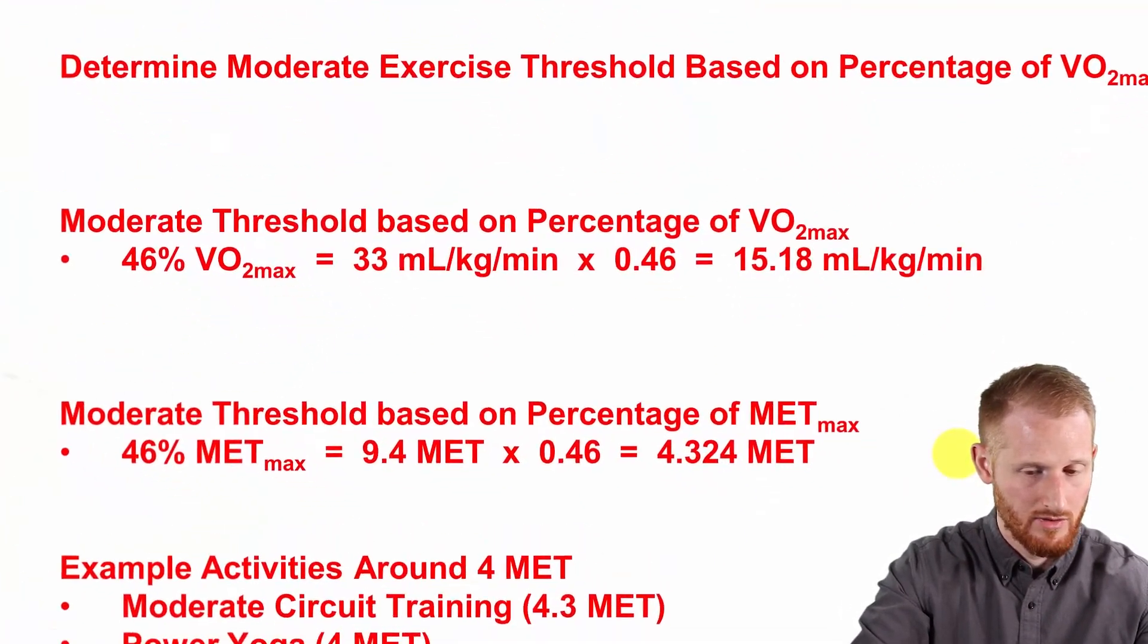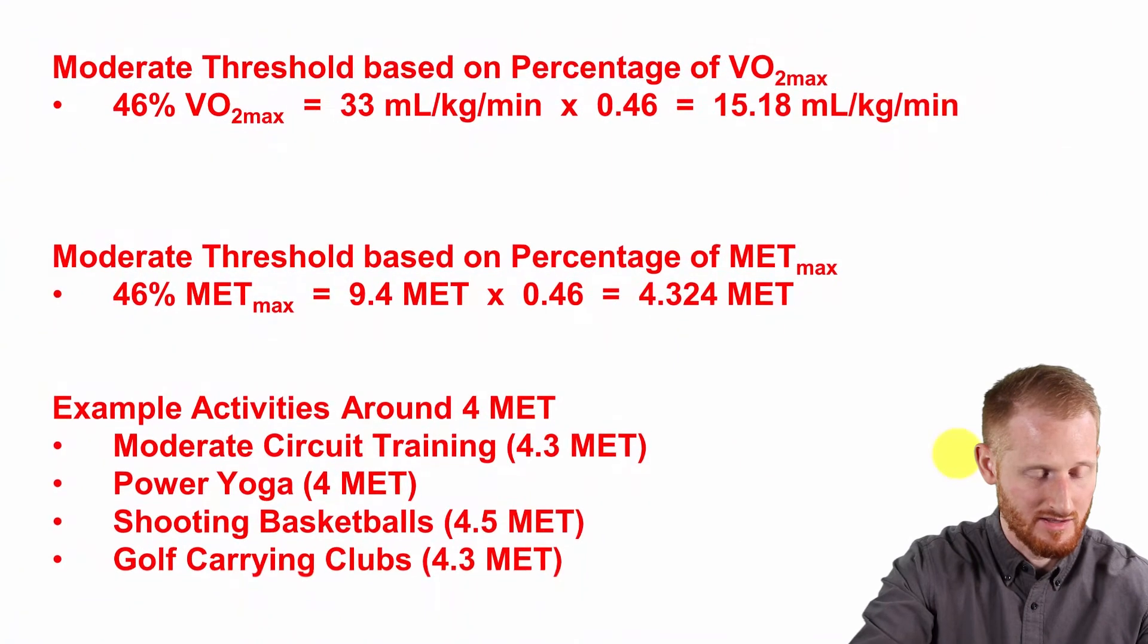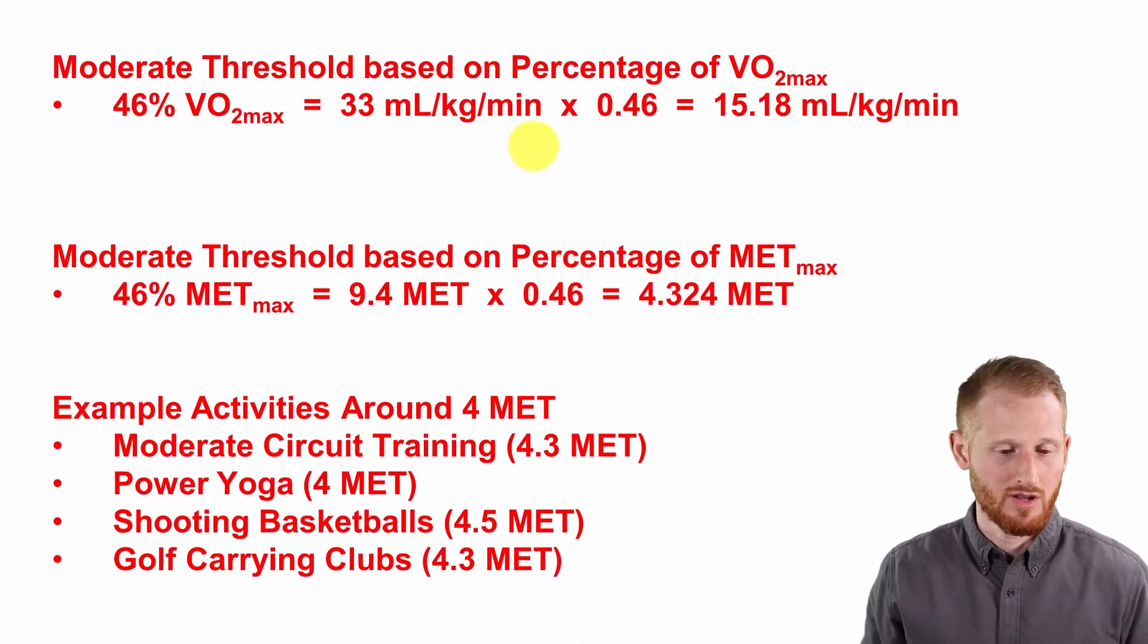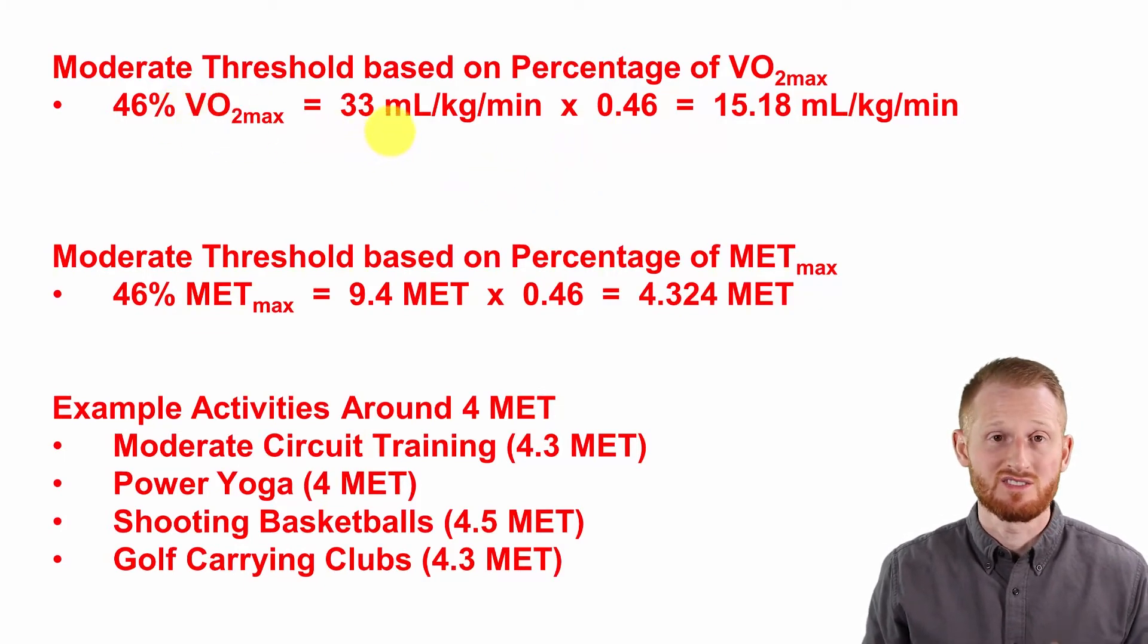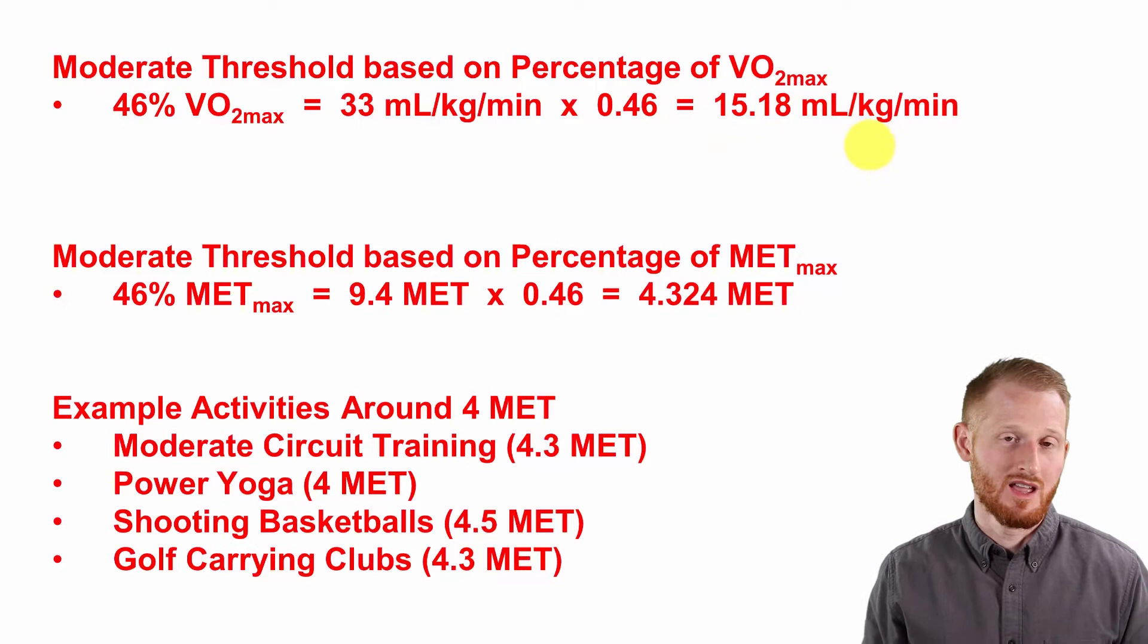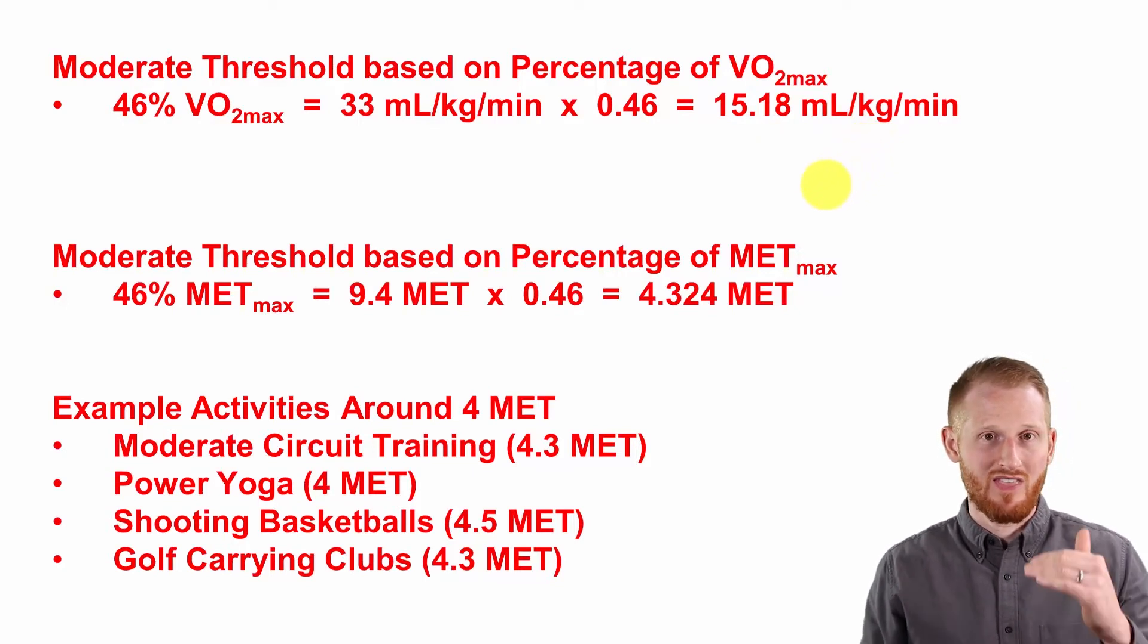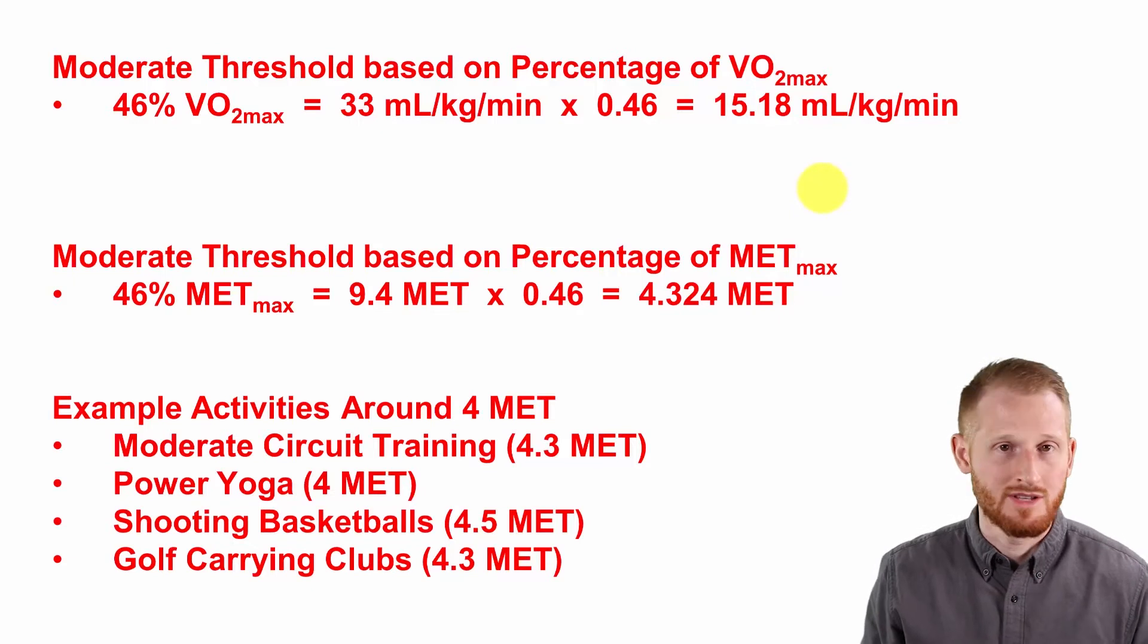First thing we're going to do then is calculate the moderate intensity threshold for VO2 max. So remember that is 46 percent. Her VO2 max is 33 mLs per kg per minute, and so we're going to just multiply that by 0.46 for the decimal format of 46 percent. And that gives us 15.18 mLs per kg per minute as the VO2 level she would have to work at in order to hit that minimal threshold for moderate intensity exercise.